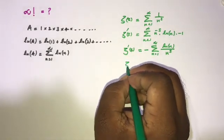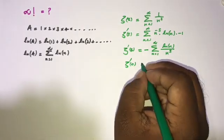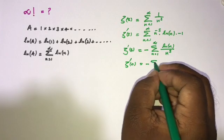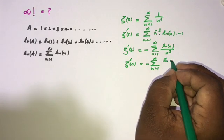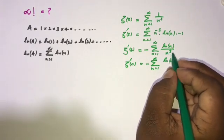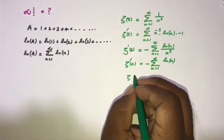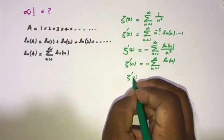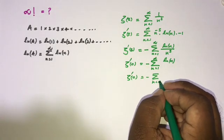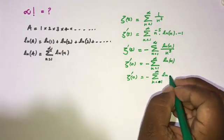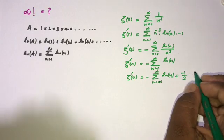Now I'm going to plug in 0 for s. So we can write zeta prime of 0 is equal to minus the infinite sum from 1 to infinity of natural log of n over n to the 0 power, which equals minus the sum from 1 to infinity of natural log of n. The value of zeta dash of 0 is known to be minus one-half times natural log of 2 pi.